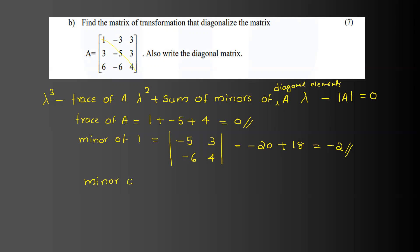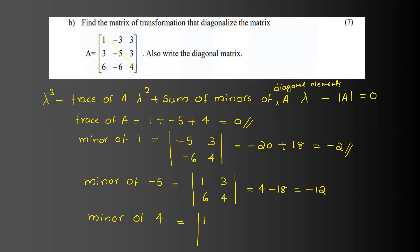The second diagonal element is -5. Cancel the second row and second column. The minor is the determinant of [[1, 3], [6, 4]], equal to 4 minus 18, which is -14. The third diagonal element is 4. Cancel the third row and third column. The minor is the determinant of [[1, -3], [3, -5]], equal to -5 minus (-9), which gives -5 plus 9, equal to 4. Wait, that gives minus 9, so the result is -14.